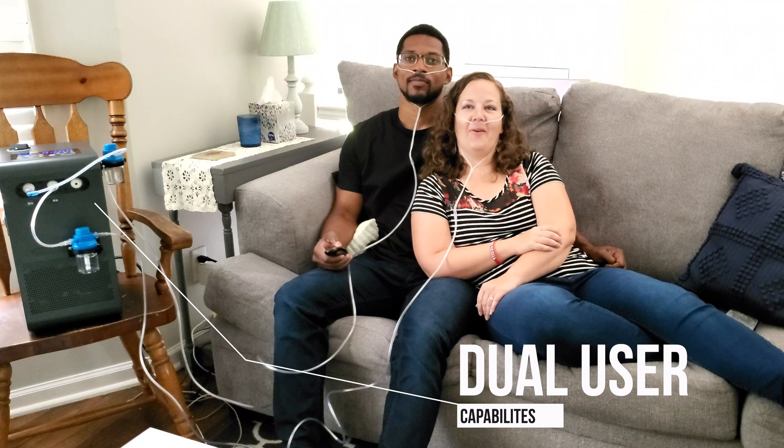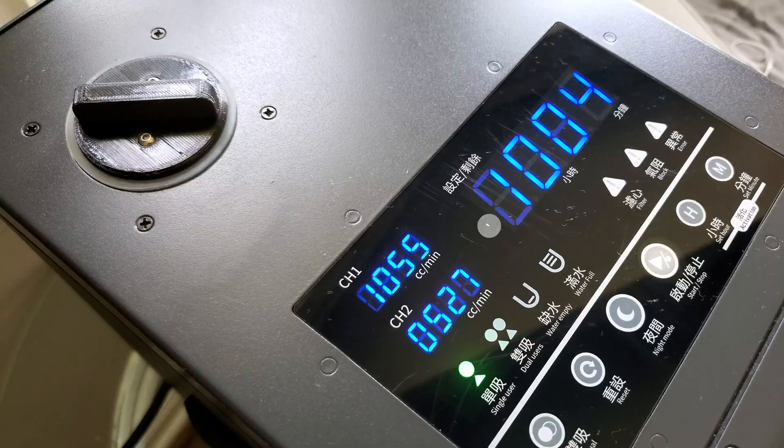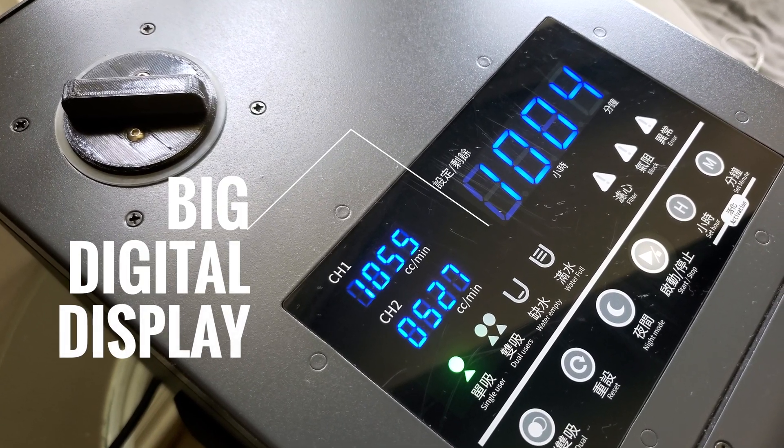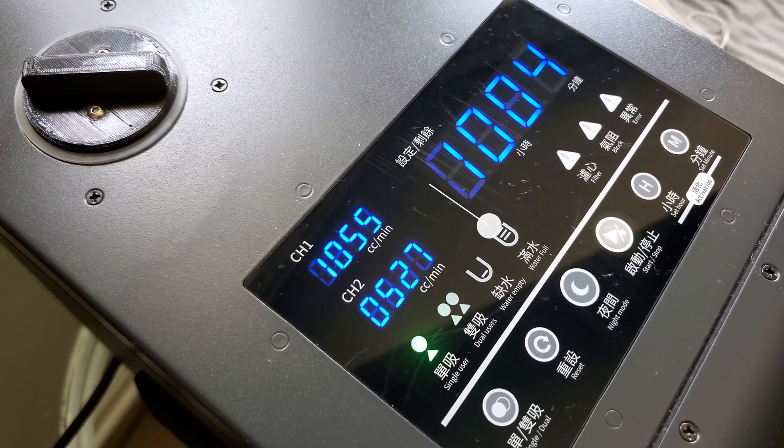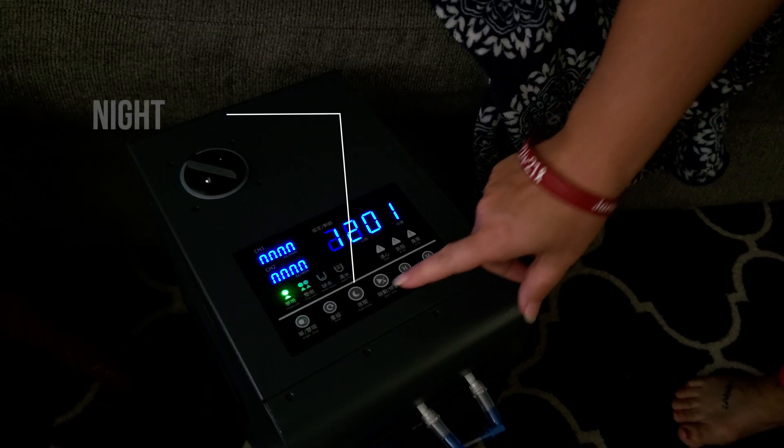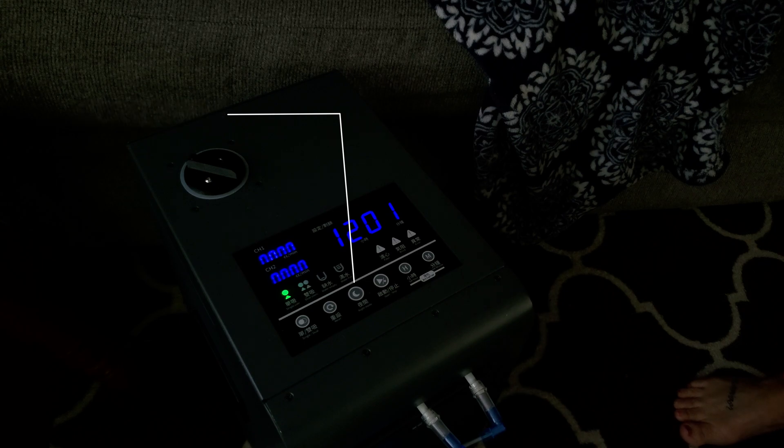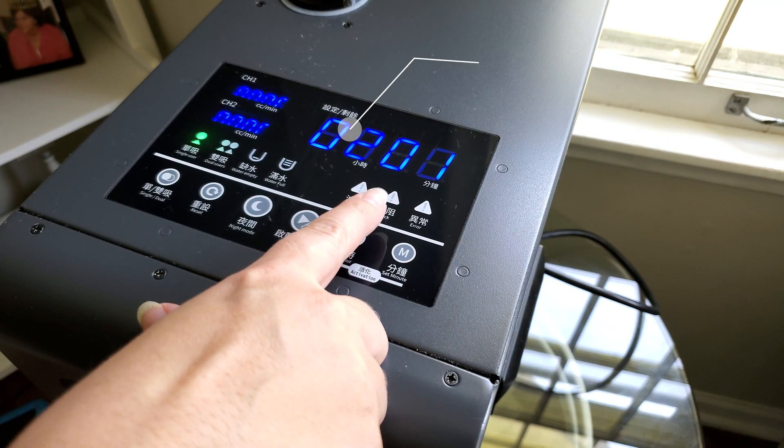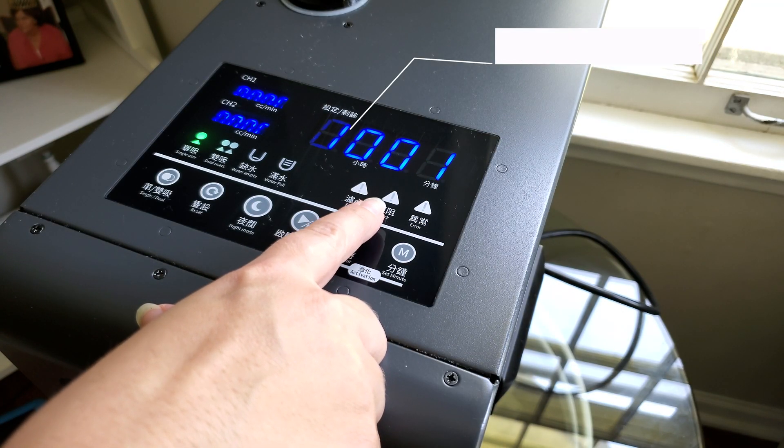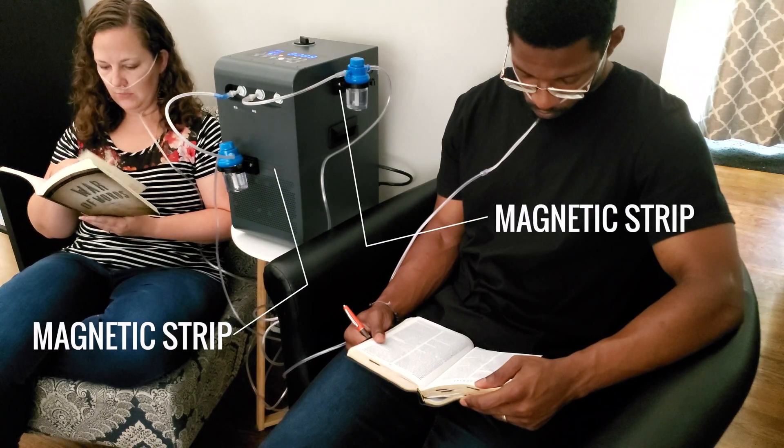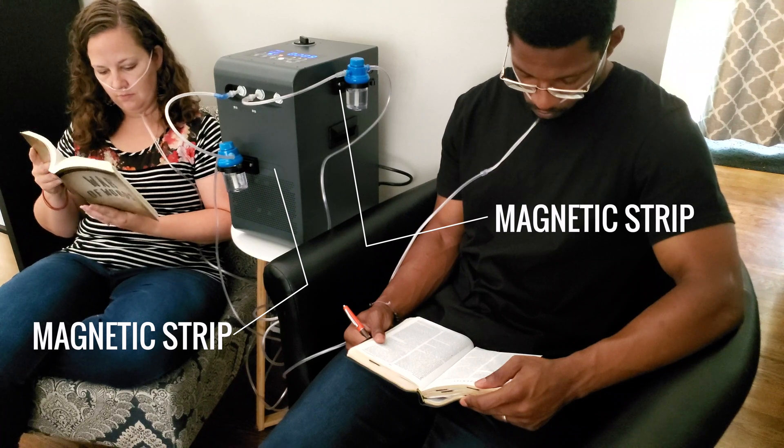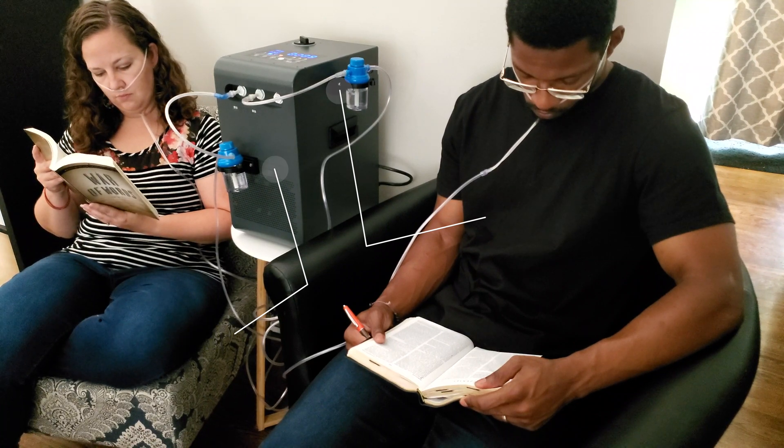The system comes with dual user capabilities so two people can breathe at the same time at 500 milliliters per minute of H2. It also comes with a big digital touch display displaying hydrogen gas and oxygen gas production in milliliters per minute. The system also comes with a night mode that allows you to dim the display. Furthermore, the device allows you to do inhalation sessions up to 12 hours, and lastly the system comes with magnetized holders for the humidifier cups allowing you to move them from the front or to the side.